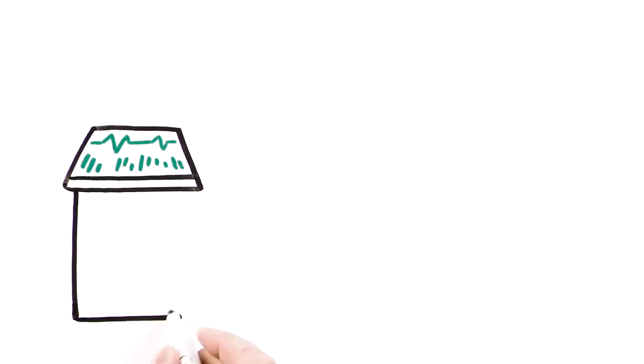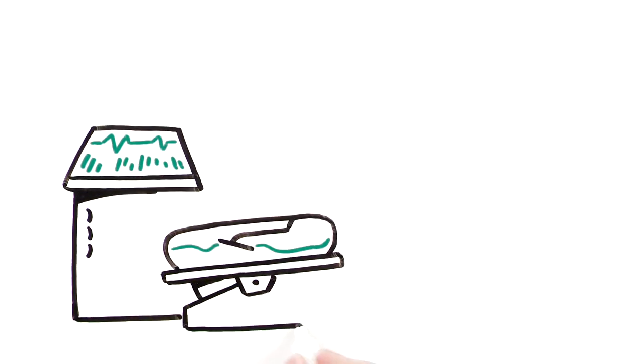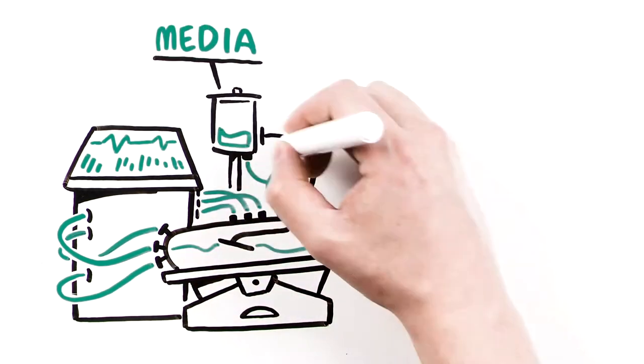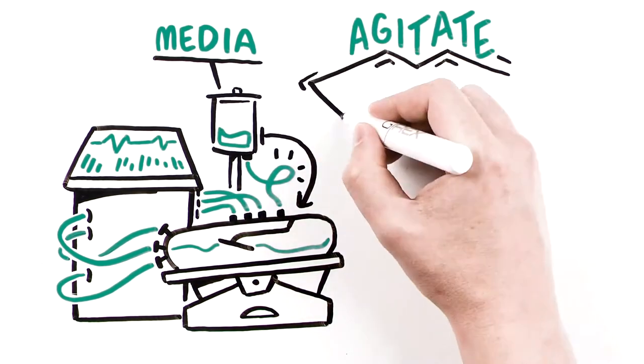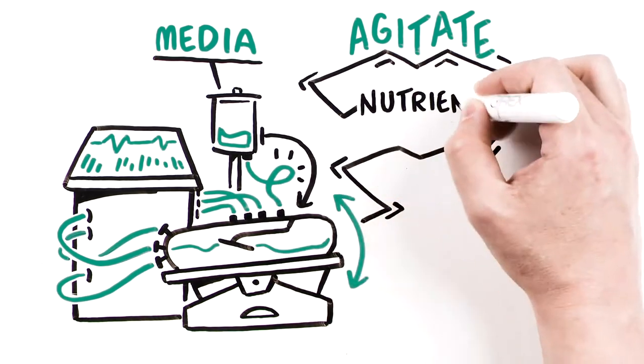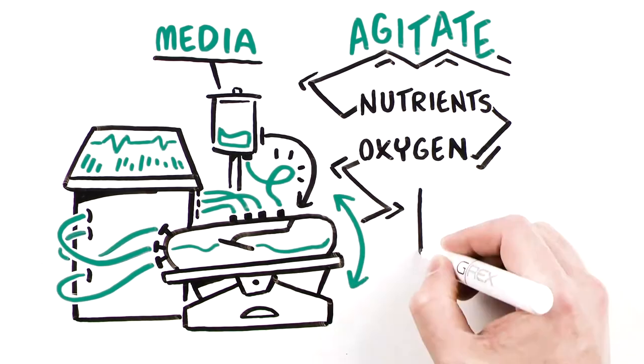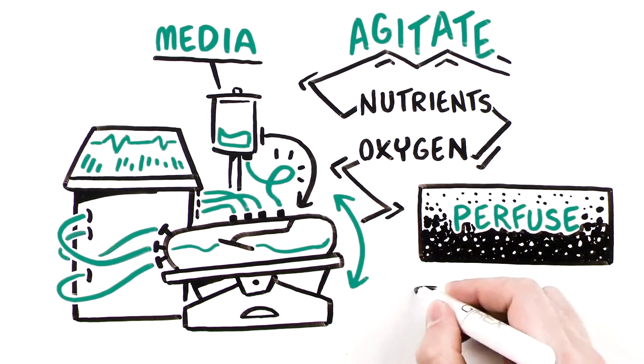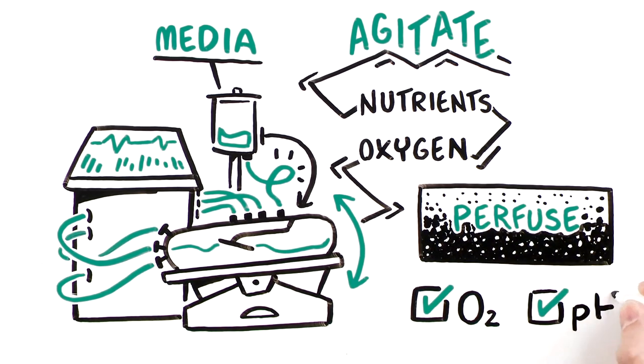Forced to automate feeding, complex machines were created to automatically move media from a source container to the cell growth container and agitate or rock the cell growth container to deliver nutrients and oxygen to cells. Simultaneously, the machines perfuse gas to the cell container to meet oxygen demand and control pH levels.